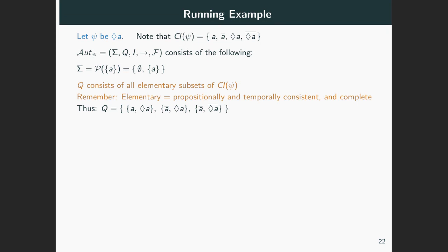The set of states Q consists of all elementary subsets of the closure, where elementary means propositionally and temporally consistent and also complete. In our case we have three states: one containing A and eventually A, one containing not A and eventually A, and one containing not A and not eventually A. Remember that these correspond to the possible scenarios for deciding the truth and falsity of the subformulas of our given formula.